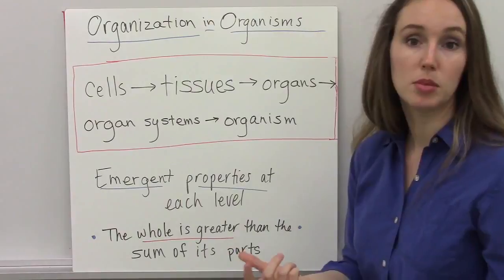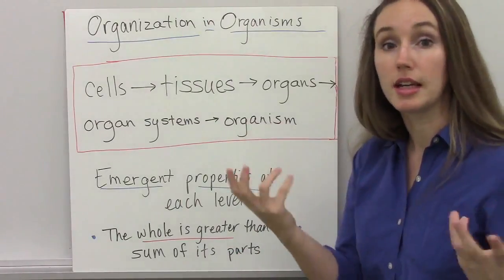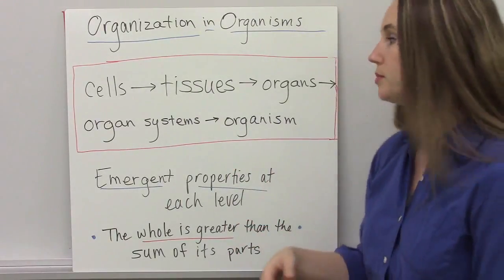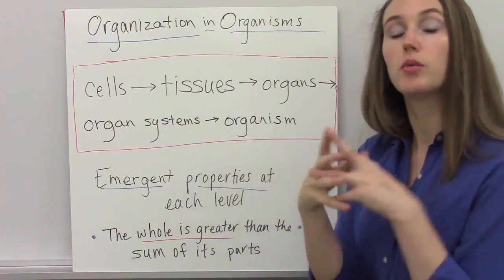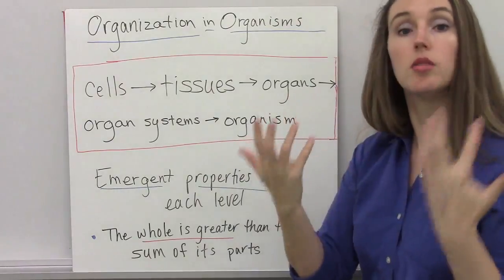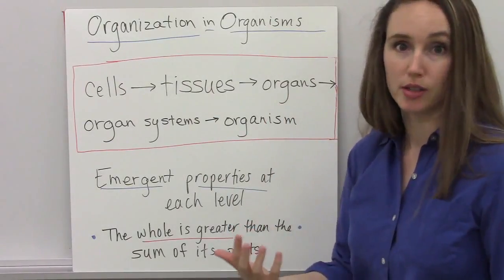Like your endocrine system is made up of all the different glands within your body that make hormones. And when you put different organ systems together in just the right way, it makes a complete living being, an organism.